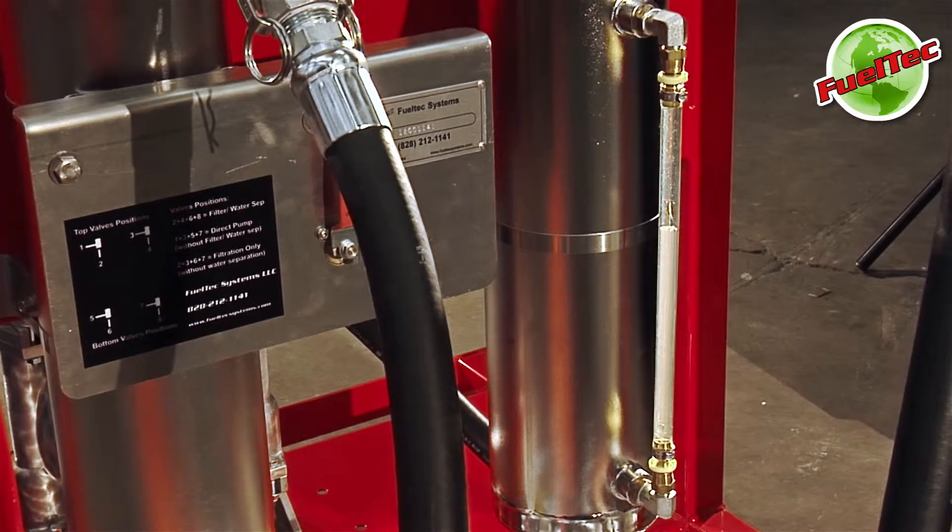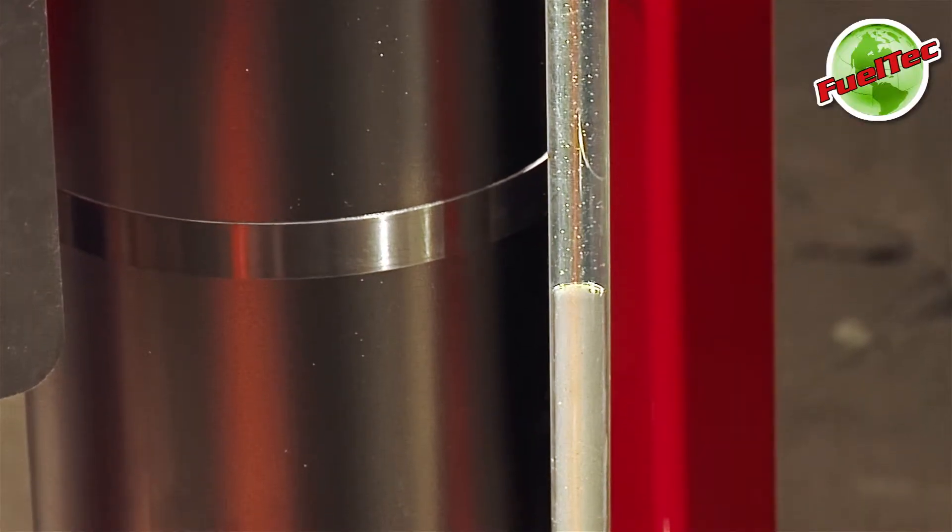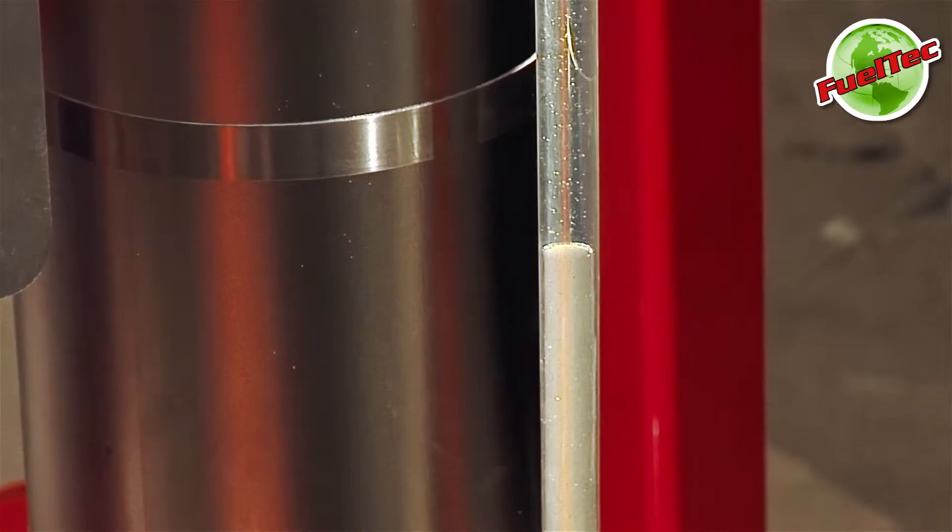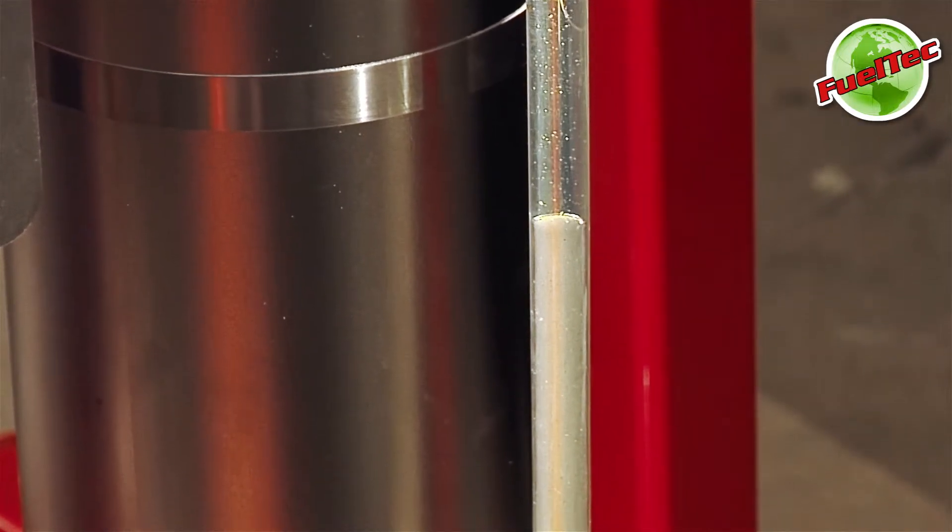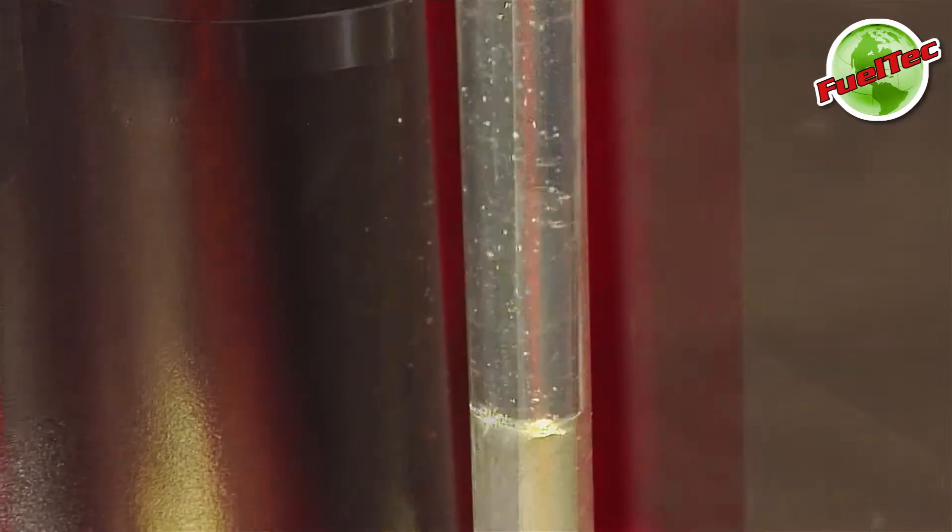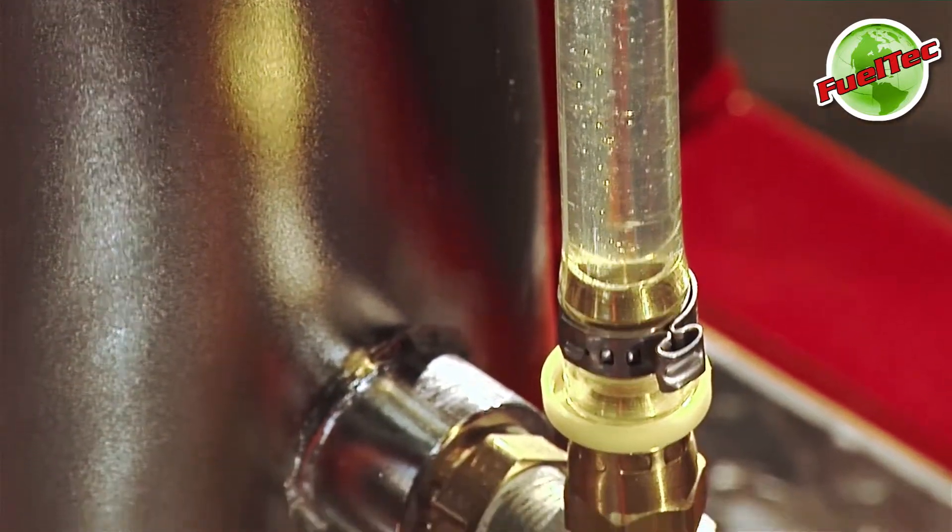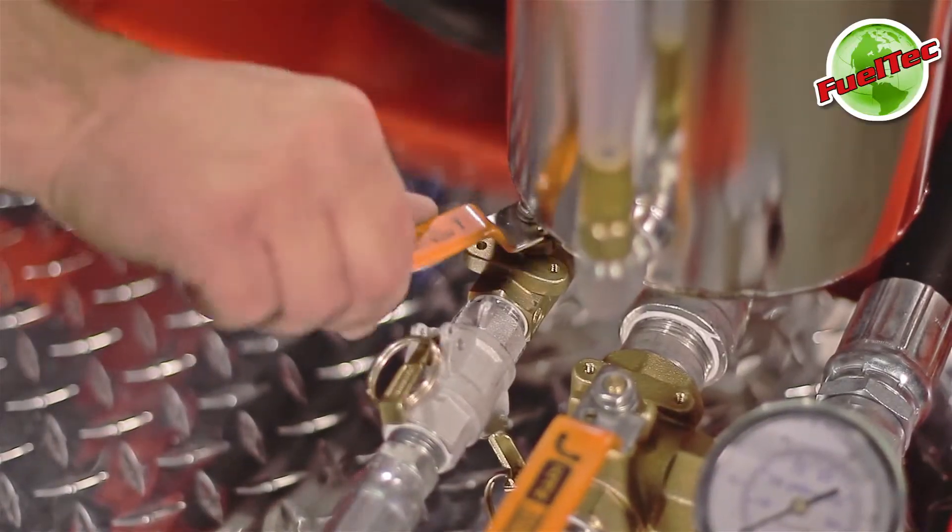Then watch as the water drains from the tube. When the water level is near the bottom of the sight tube, close the drain water valve.